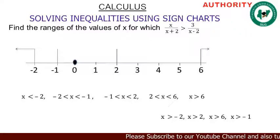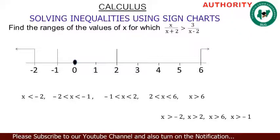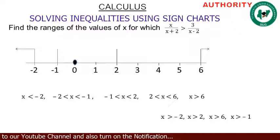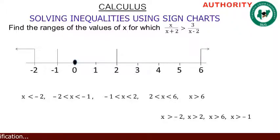Range 5 is x > 6, meaning all numbers from 6 upwards: 7, 8, 9, 10, 11, 12, and so on. So in summary, we have five ranges: from -2 downwards, between -2 and -1, between -1 and 2, between 2 and 6, and from 6 upwards.